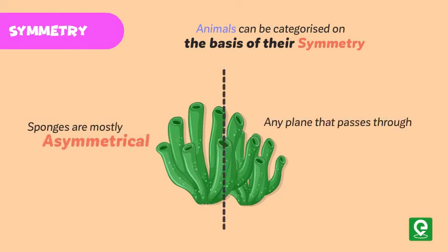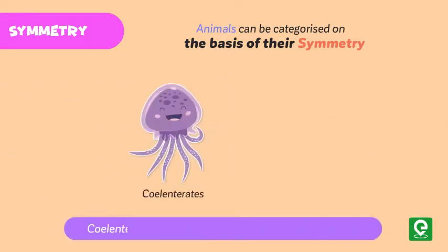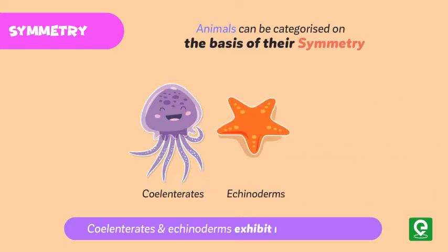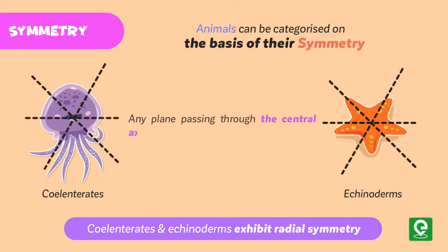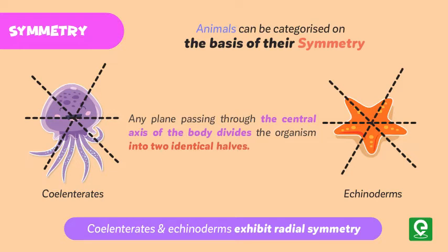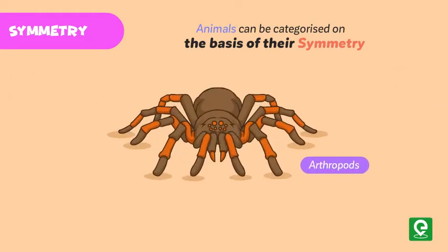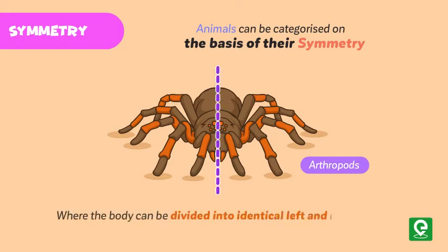Symmetry: animals can be categorized on the basis of their symmetry. Sponges are mostly asymmetrical — any plane passing through the center does not divide them into equal halves. Cnidarians and echinoderms exhibit radial symmetry, where any plane passing through the central axis divides the organism into two identical halves. Animals like annelids and arthropods exhibit bilateral symmetry, where the body can be divided into identical left and right halves in only one plane.